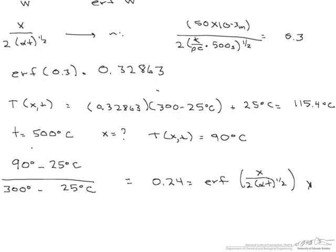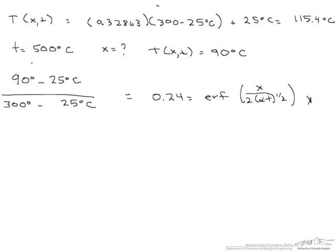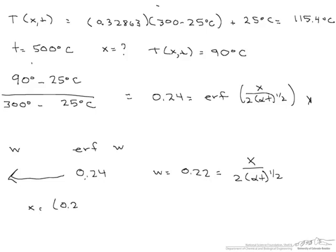What we are trying to solve for here is that X. We don't have our W, but we do have our error function of W, which is 0.24. So when we look up our error function of W of 0.24, we can find a corresponding W, which is 0.22, and that's going to equal X divided by 2 times alpha T to the 1 half. So using the same alpha T that we had before, our X is going to equal 0.22 times 2 times 1.3 times 10 to the minus fifth meter squared per second times our time, 500 seconds, and this X is to the 1 half.